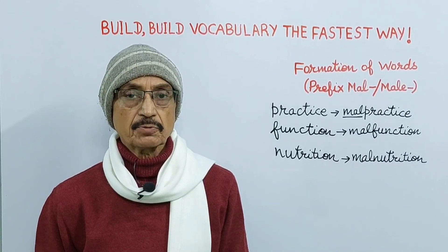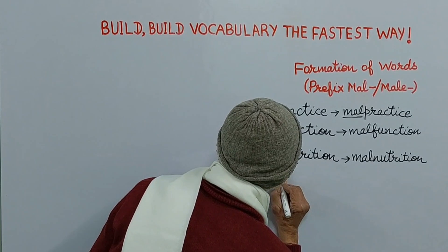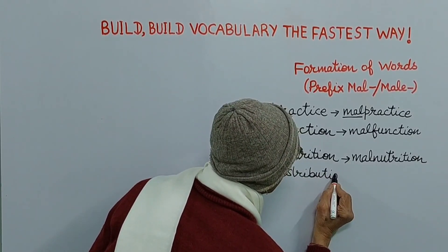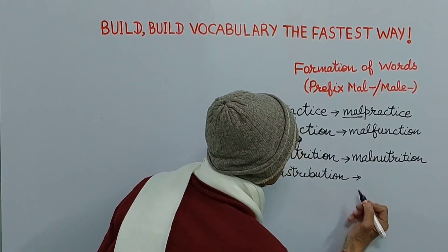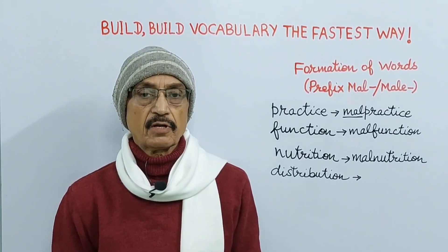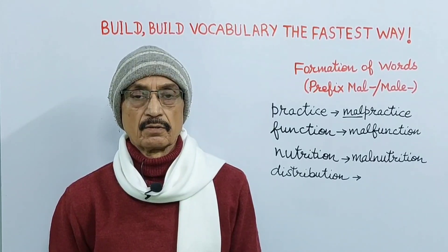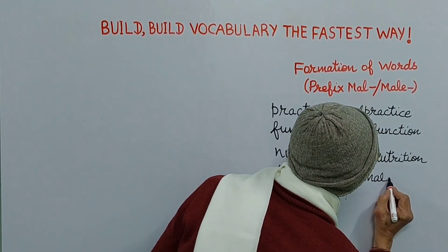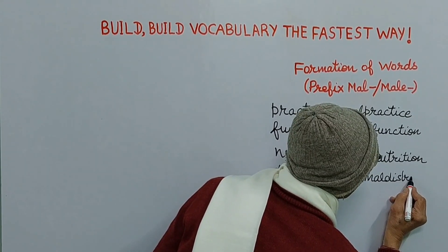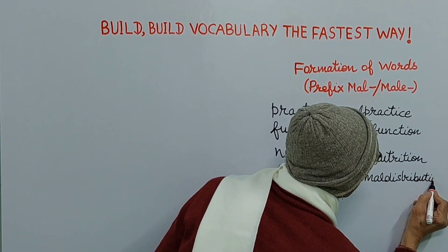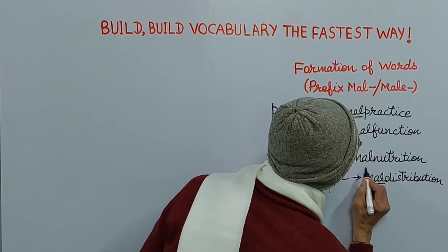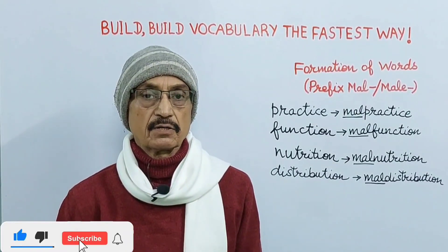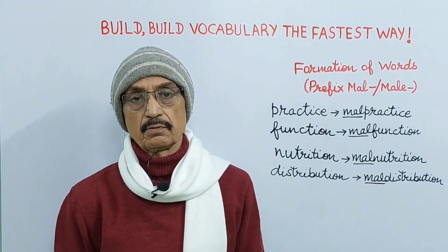Next is distribution. When we take prefix mal before it, it becomes maldistribution. Maldistribution means bad or faulty distribution, undesirable inequality.